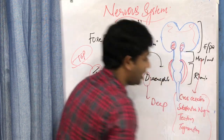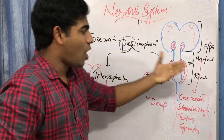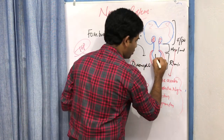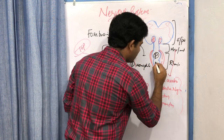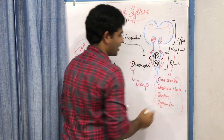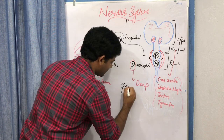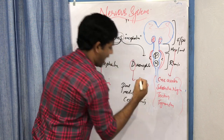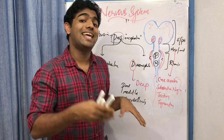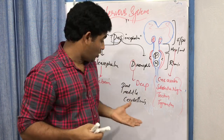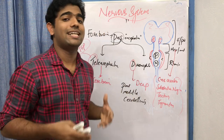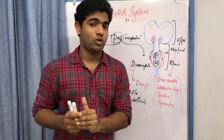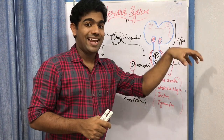The rhombencephalon or hindbrain includes the pons, the medulla oblongata, and the cerebellum. The medulla is also known as the myelencephalon — 'M' for myelencephalon. The pons and cerebellum together are known as the metencephalon.